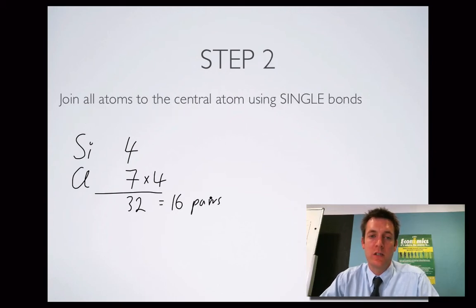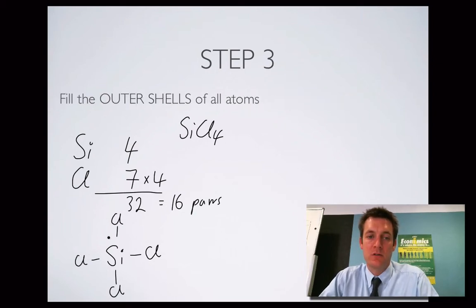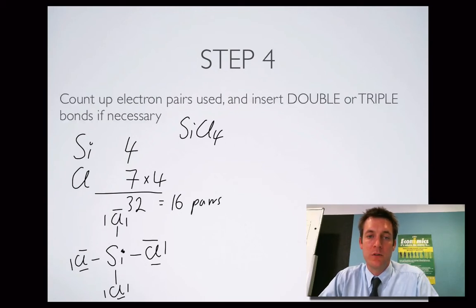Now fill the outer shells of all the atoms. Each chlorine needs three more pairs to give it four total. Silicon is already got its four pairs from the four single bonds, so it already has a full outer shell. Counting up all electron pairs used — four bonds plus three lone pairs on each of the four chlorines — gives us 16 pairs total, which matches exactly. No double or triple bonds are needed. Done.